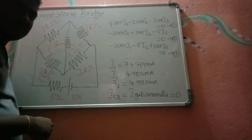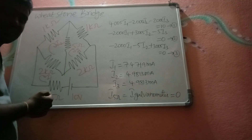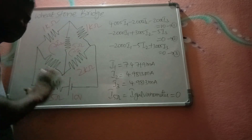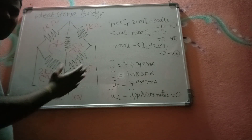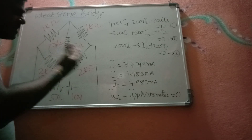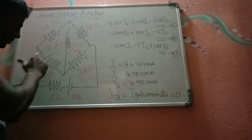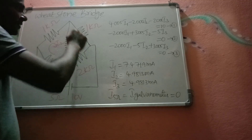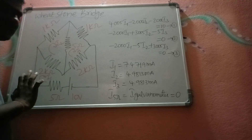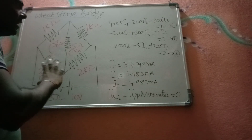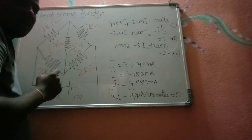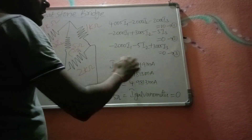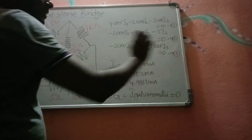When the bridge is in balanced condition, we will now see how the galvanometer resistance and the internal resistance of the battery are affected. To understand this, I will use loop equations — mesh analysis. I considered I1 as the current for the first loop, I2 for the second loop, and I3 for the third loop. These are the loop or imaginary currents. Applying KVL gives us the equations: one equation for each loop.